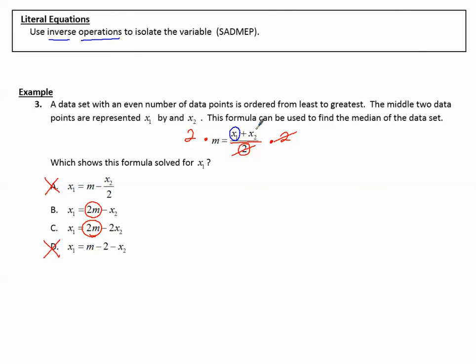Then I have to get the plus x sub 2 to go away. What's the opposite of adding x sub 2? Subtracting x sub 2 from both sides of the equation. Which one of these am I subtracting x sub 2? Well in both of them I'm subtracting, but this one I'm subtracting 2 of them. Here I'm subtracting x sub 2, so b is the correct choice.